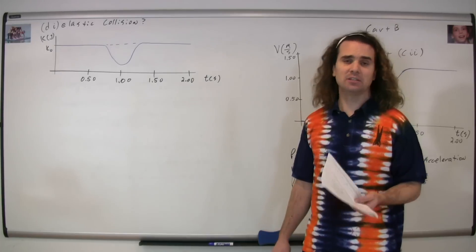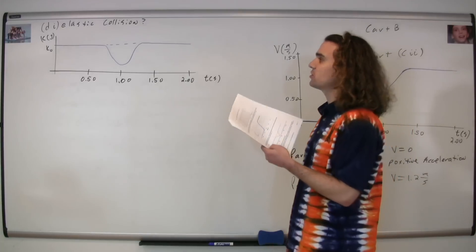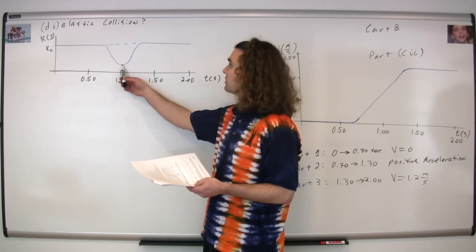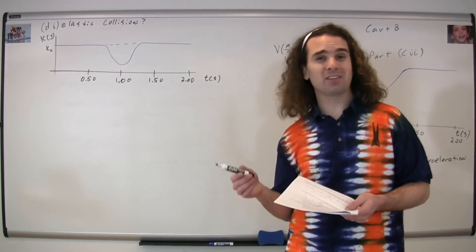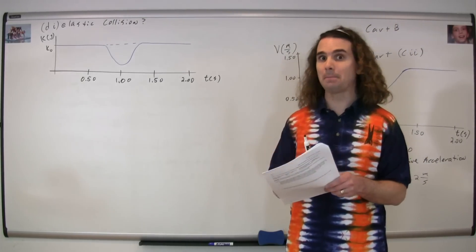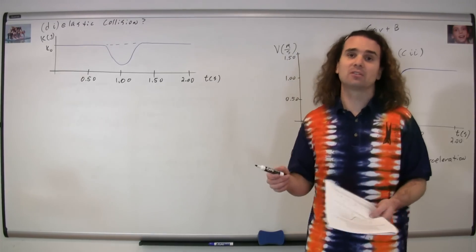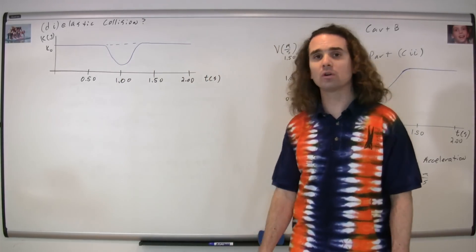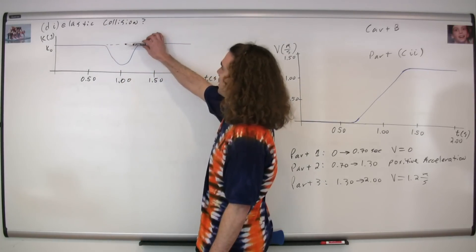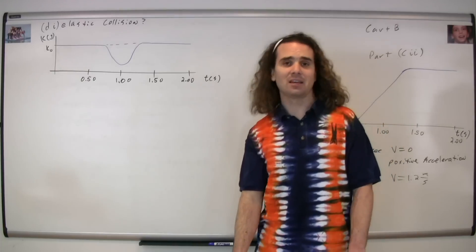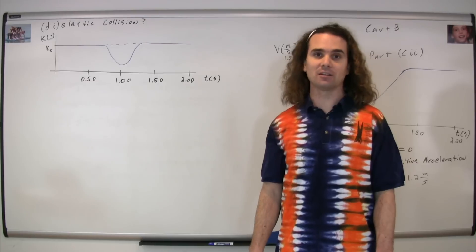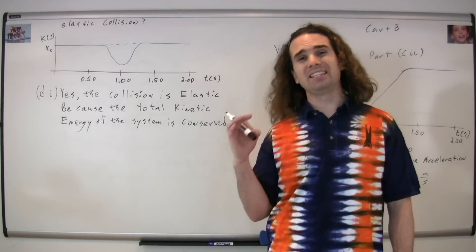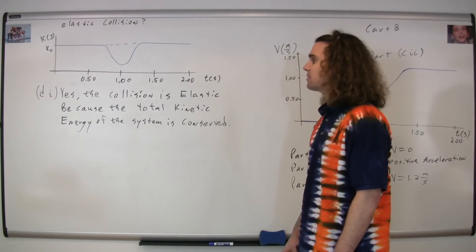Part di asks: is the collision elastic? A graph of kinetic energy as a function of time is provided. During the collision the kinetic energy of the system decreases, then comes back up to where it started. In elastic collisions, kinetic energy is conserved. Since the total kinetic energy returns to the same level after the collision, yes, kinetic energy is conserved and it is an elastic collision.